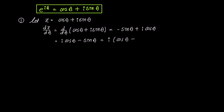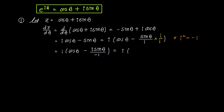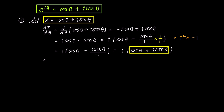Factoring out i, we obtain i times the quantity cosine theta minus sine theta over i. To eliminate the i in the denominator, we multiply both the numerator and denominator by i. This yields i times cosine theta minus i sine theta over negative 1, and upon simplification we rewrite it as i times cosine theta plus i sine theta, which upon substituting back becomes i times z.